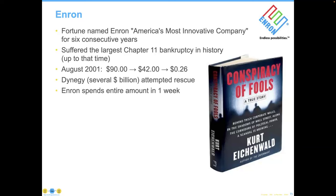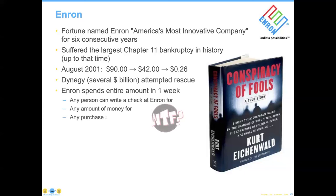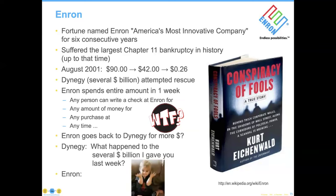Dynegy gave Enron several billion dollars at the beginning of the week, and Enron spent the entire amount of money in one week. That takes actually a lot of effort to do. The time to have this conversation is not after you get married — it's before. Because you would have found out that any person at Enron could write a check for any amount of money for any purchase at any point in time. Enron went back to Dynegy at the end of the week and said 'can I have some more money?' And Dynegy said 'what happened to the several billion dollars I gave you last week?' And Enron said no.